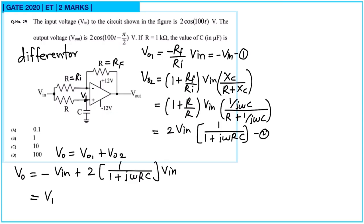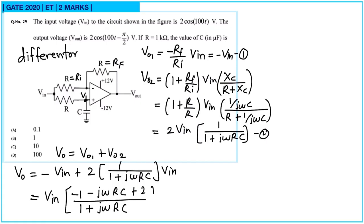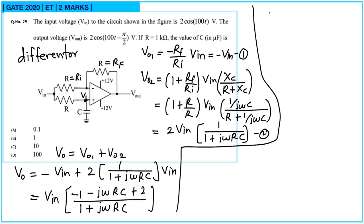Taking Vin common: Vo = Vin × [−1 + 2/(1 + jωRC)]. Combining over a common denominator: Vo = Vin × (−1 − jωRC + 2)/(1 + jωRC) = Vin × (1 − jωRC)/(1 + jωRC). Rearranging: Vo/Vin = (1 + jωRC)/(1 − jωRC).